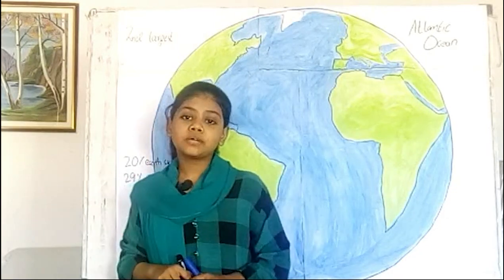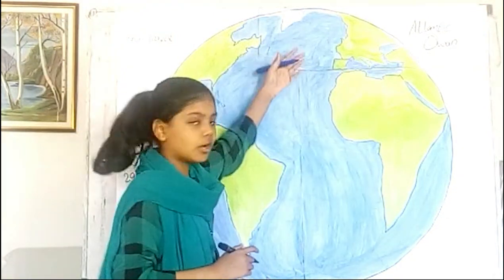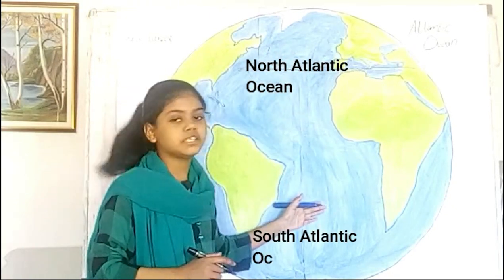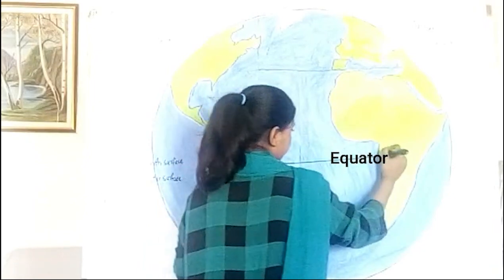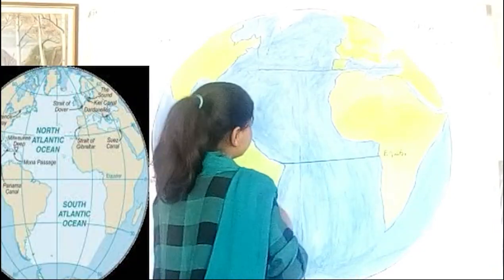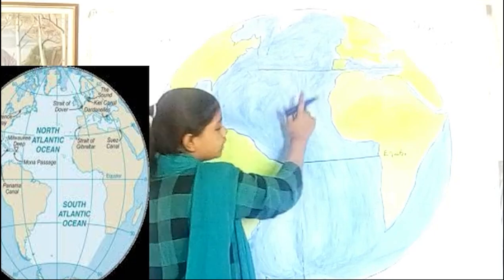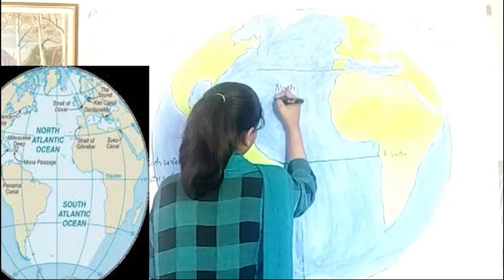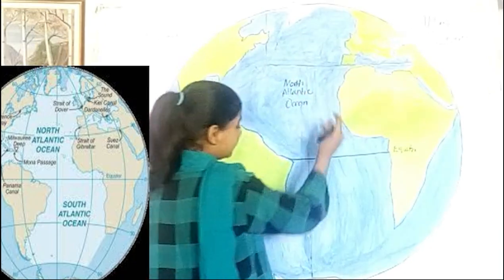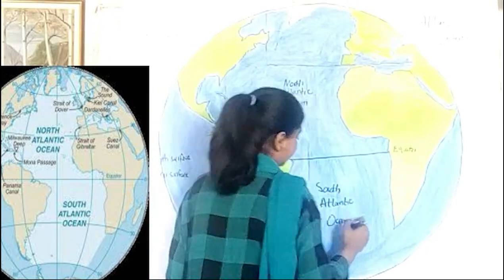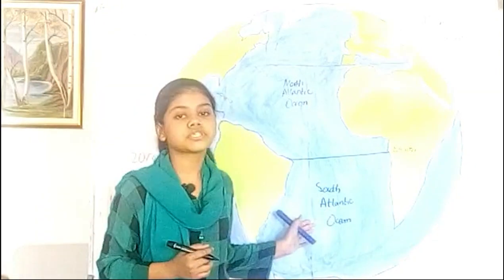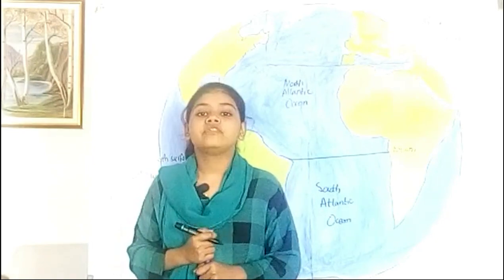The Atlantic Ocean divides into two parts: the North Atlantic Ocean and the South Atlantic Ocean, divided by the equator. Until the 19th century, the South Atlantic Ocean was called the European Ocean. The Atlantic Ocean is 6.5 times the size of the US.